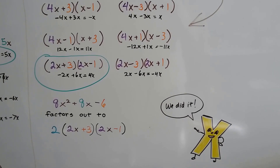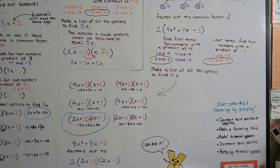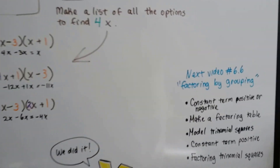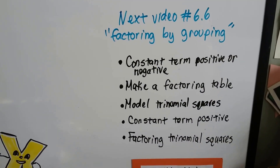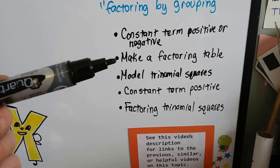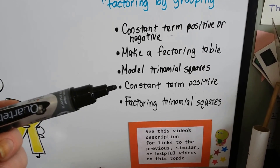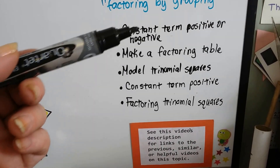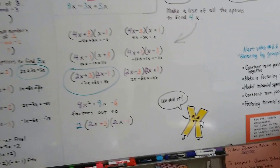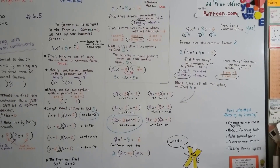Don't look at this as being hard. In the next video, section 6.6, we're going to do factoring by grouping. There will be links in the description for the constant term positive or negative, making a factoring table, modeling trinomial squares, and factoring trinomial squares. Those links will be in the description. Let's talk about factoring by grouping in the next video — see ya, bye.